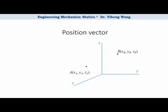If you have two points, point A with coordinates xa, ya, and za, and point B with coordinates xb, yb, and zb,